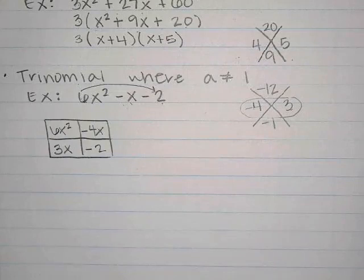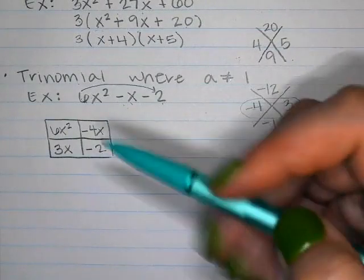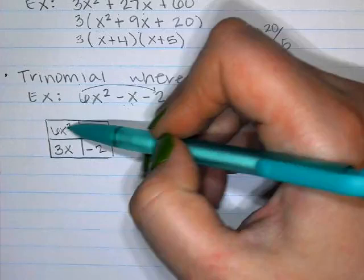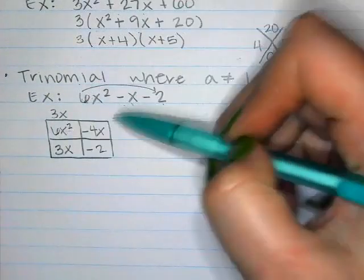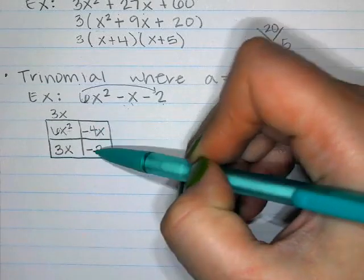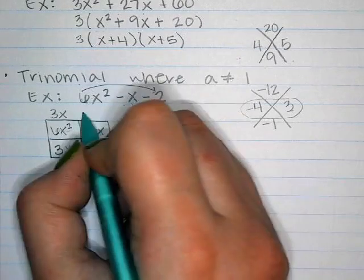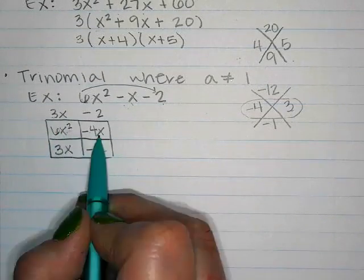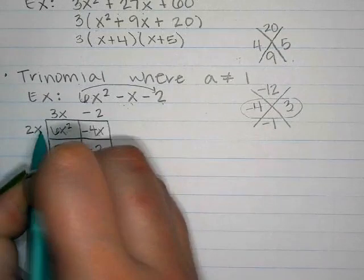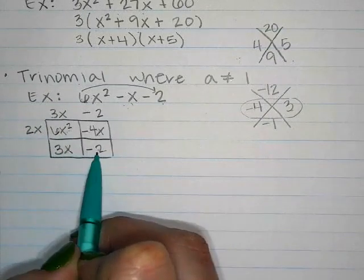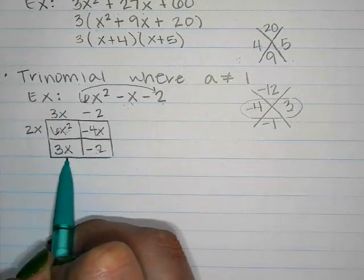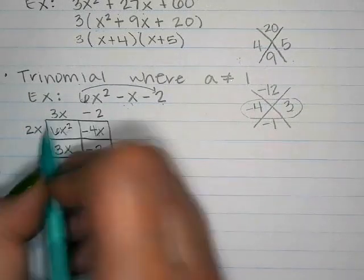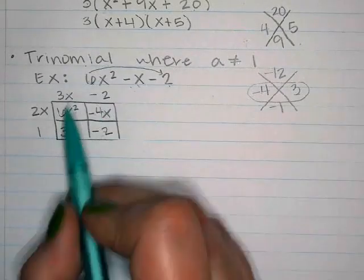From the box, we find the GCF of each row and column. GCF of 6x squared and 3x is 3x. GCF of negative 4x and negative 2 is negative 2. GCF of 6x squared and 4x is 2x. GCF of 3x and negative 2 — nothing in common, so it's 1. Writing the factors: we get (3x minus 2)(2x plus 1).